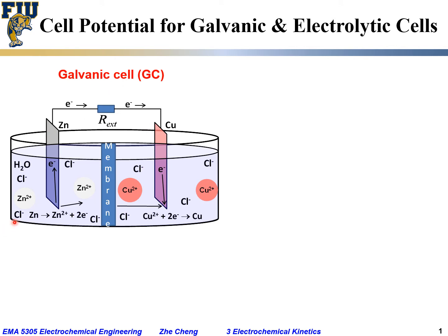This is an example we have shown before. We have zinc metal and copper metal, each inserted into a solution — zinc into a solution containing zinc chloride, copper into a solution containing copper chloride. Between them, there may be a membrane that separates the cations but allows the chlorine anion to penetrate through, while preventing the cations from mixing.